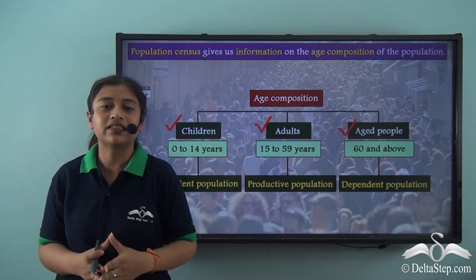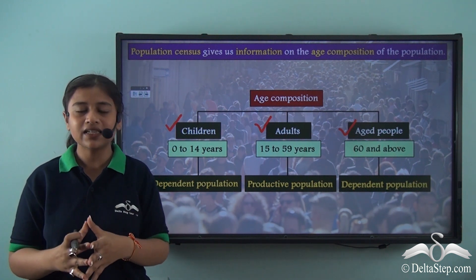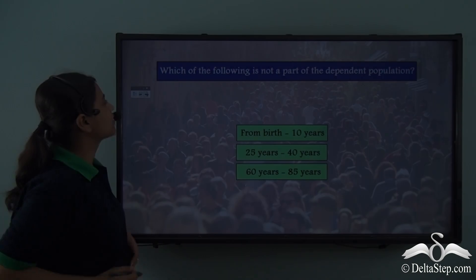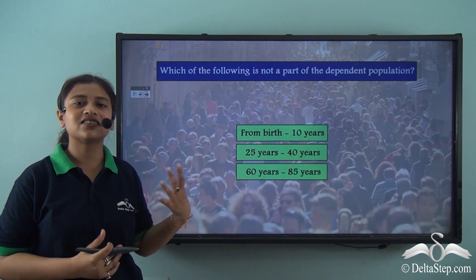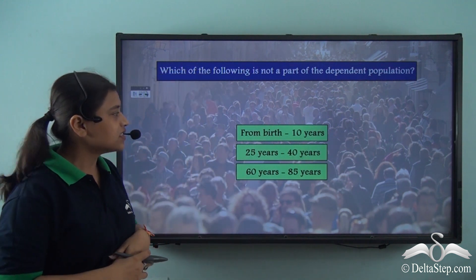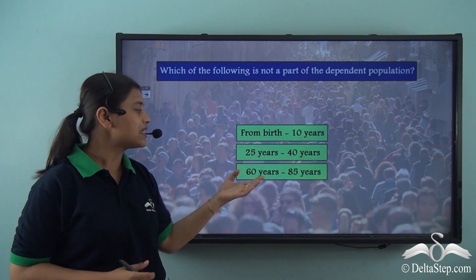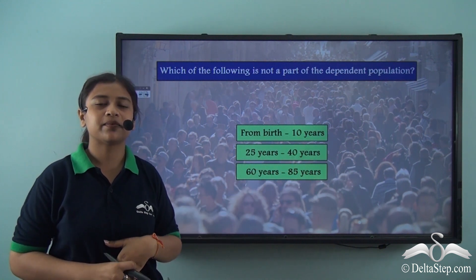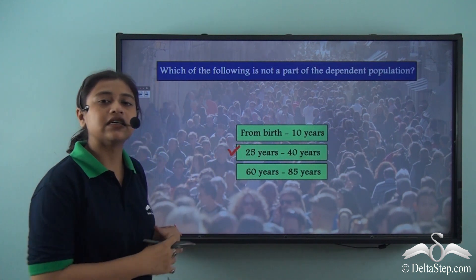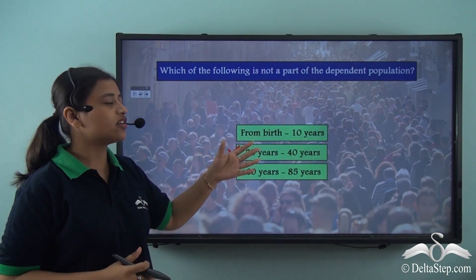So far we have understood that population census is an important official document that helps us understand the population in detail and helps us understand the age composition of the population. Which of the following is not a part of the dependent population? Is it from birth to 10 years, from 25 to 40 years, or from 60 to 85 years? We just learned that from 25 to 40 years they are part of the productive population, so the correct answer is 25 years to 40 years.